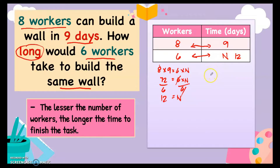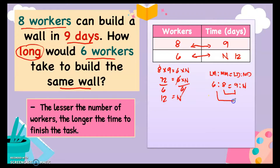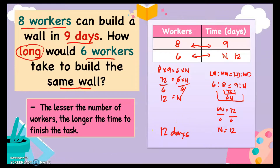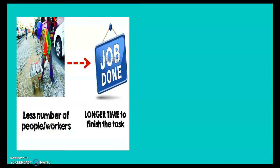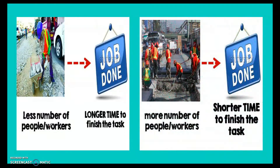In equation form: less workers is to more workers equals less days is to more days. So 6 is to 8 equals 9 is to n. Cross multiplying gives 6n equals 72, and dividing both sides gives n equals 12. So how long would it take 6 workers to build the same wall? It will take 12 days. The relationship is: less number of workers means longer time to finish, and more workers means shorter time.